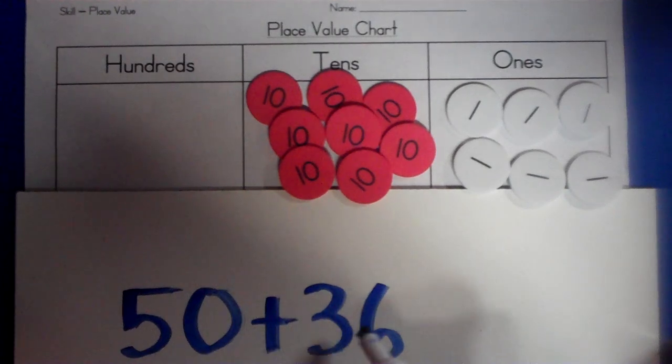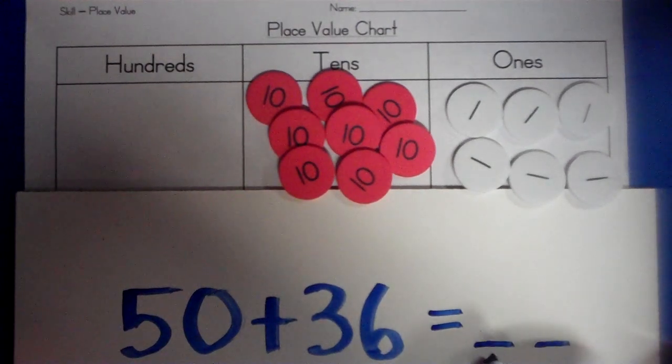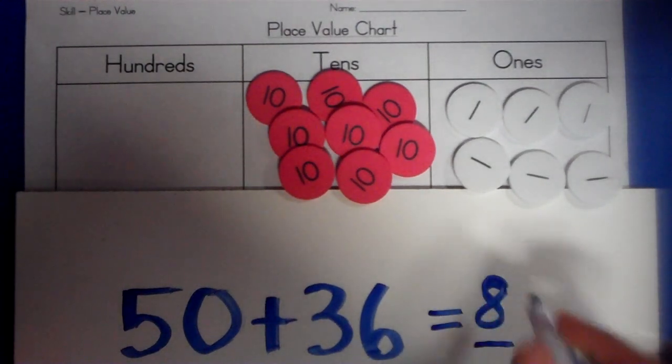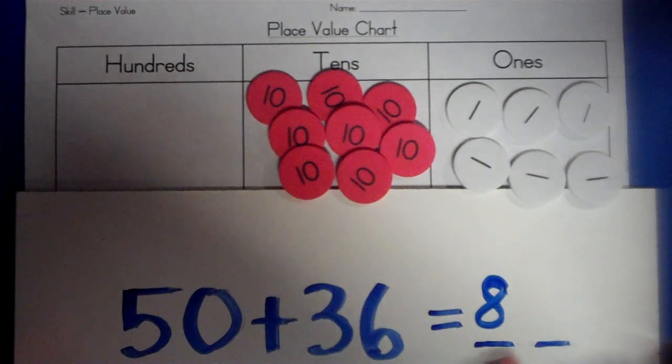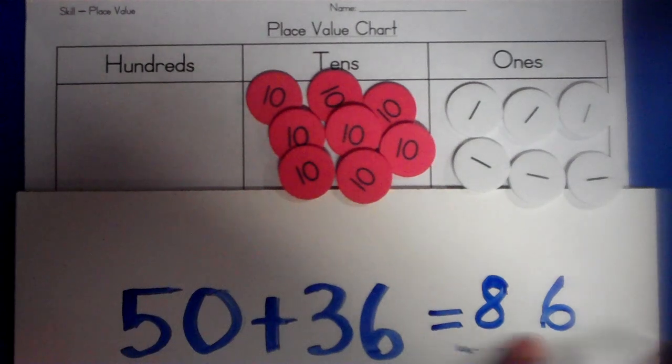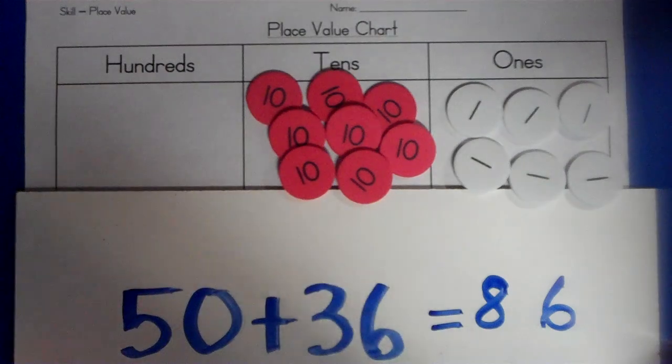So 50 plus 36 equals, if I had to draw little place value lines, 8 tens, because this is the tens place, this is the ones and the tens, so 8 is in the tens place, and 6 is in the ones place. And now I can get rid of my lines, and 50 plus 36 equals 86.